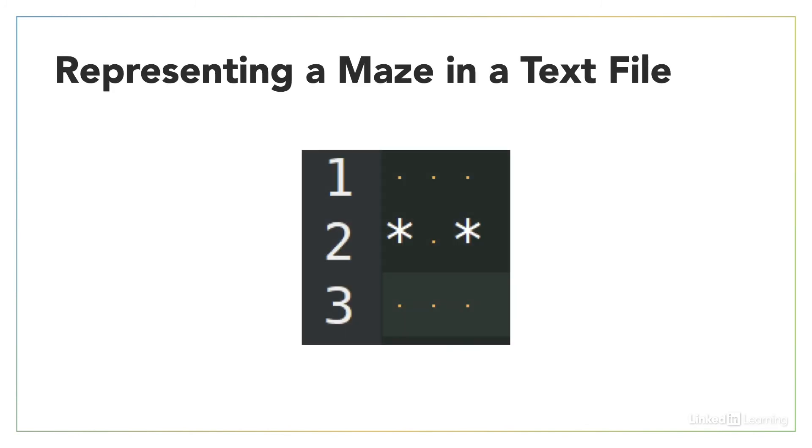And then finally, we have here a screenshot of a tiny maze represented inside of a text file. In this case, it's inside Notepad++. So we have the line numbers. Then we have the tiny dots representing spaces. And the asterisks are representing obstacles within the maze.